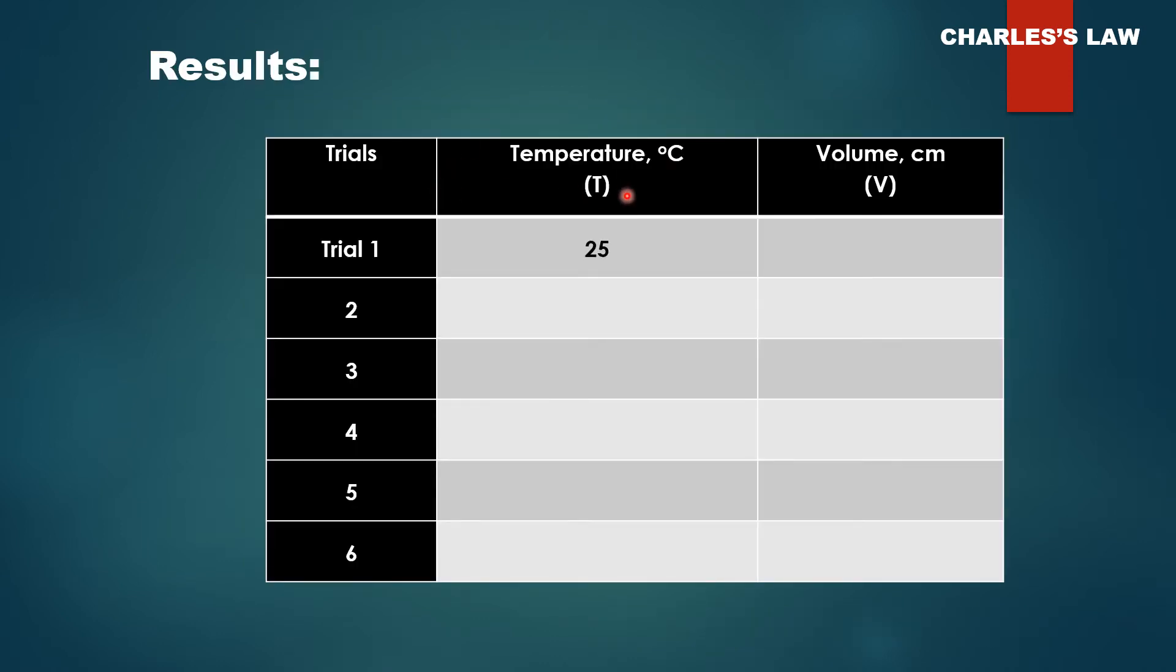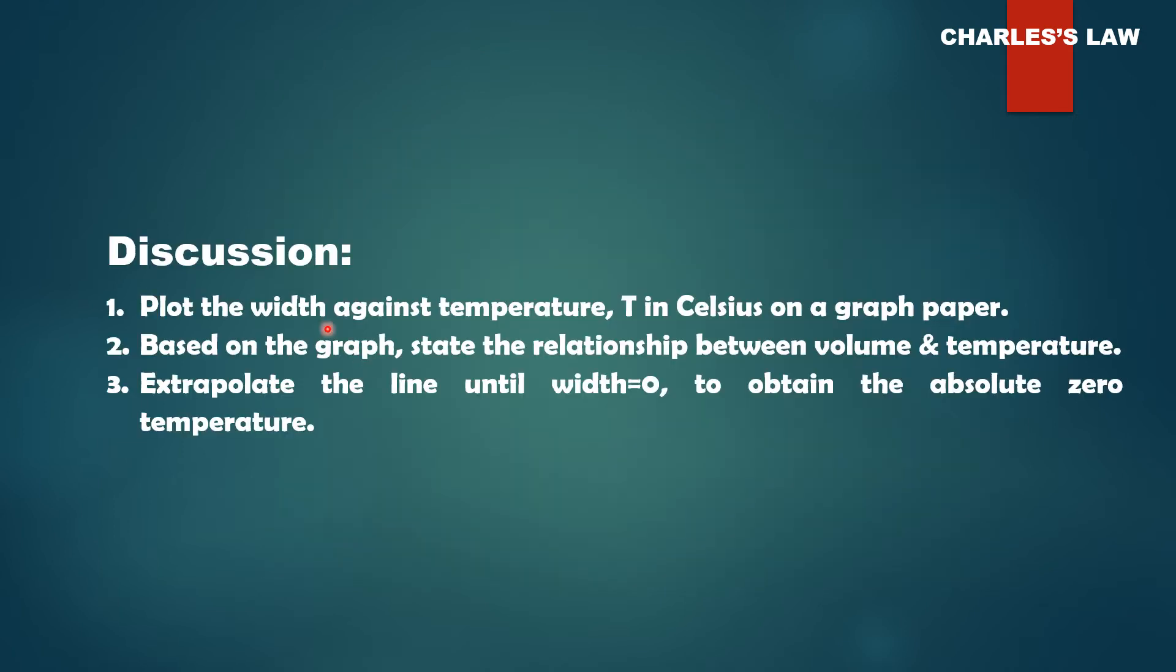In order to help you to plot the graph. You can jot down the temperature and volume based on the simulation. You can take around 6 sets of data. You plot the graph by using the width against temperature and then temperature in degrees Celsius on the graph paper. Based on the graph, state the relationship between volume and temperature. And then try to extrapolate the line until the width equal to zero to obtain the absolute zero temperature.